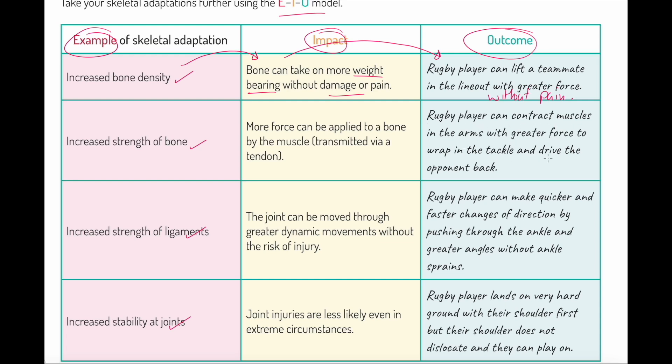Stronger bones—more force can be applied to a bone by the muscle. We've got greater force transmission. What does it mean? A rugby player can contract muscles in the arms with greater force to wrap in the tackle and drive the opponent back.